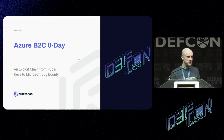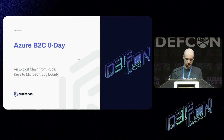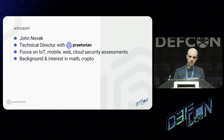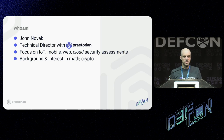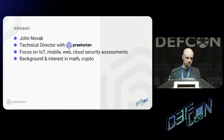This talk describes a vulnerability in Azure B2C that lets you impersonate basically any user in any tenant that uses Azure B2C. It has been fixed in a couple of different ways, with some lingering remediations. My name is John Novak, I'm a technical director at Praetorian. Most of the time I do security assessments for IoT, mobile, cloud, and different product security engagements. I have a background in math and crypto, and I have a knack for identifying what good crypto looks like in common implementations — and this one definitely falls in that category.